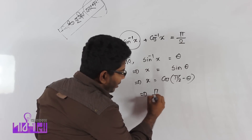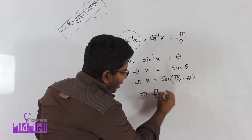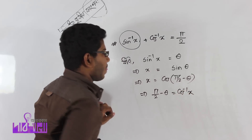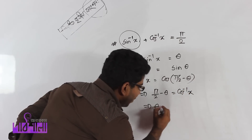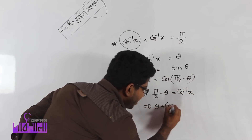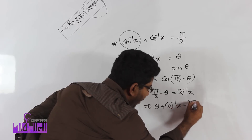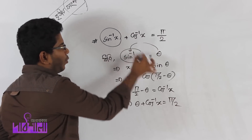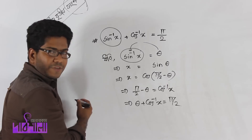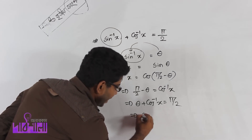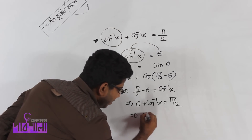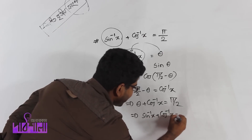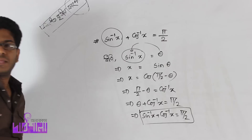Sine inverse x plus cosine inverse x equal to pi by 2 — this formula we have already derived. So similarly, another formula can also be proven: sine inverse x plus cosine inverse x equal to pi by 2.